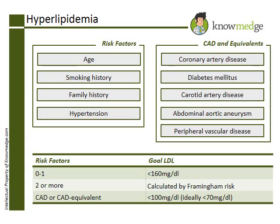Now let's go through the answer choices. Choice A is a diabetes mellitus patient, therefore the goal LDL should be less than 100, preferably less than 70, as it is for all patients with CAD equivalents.